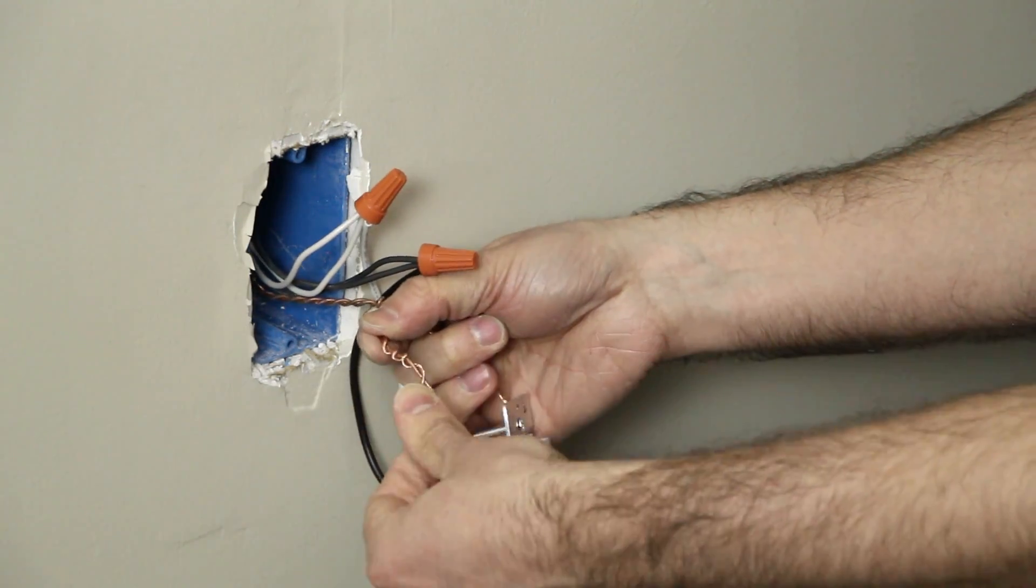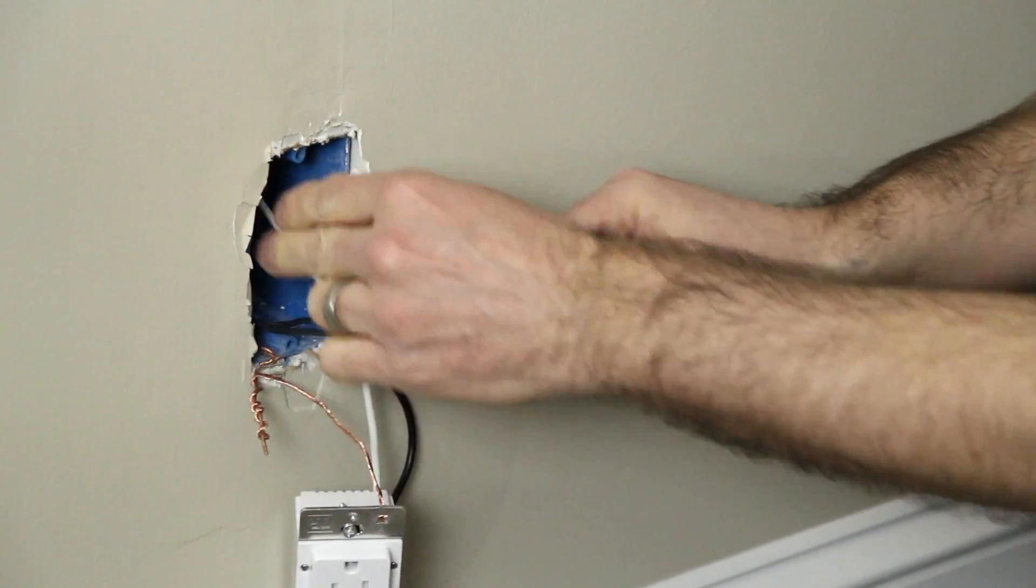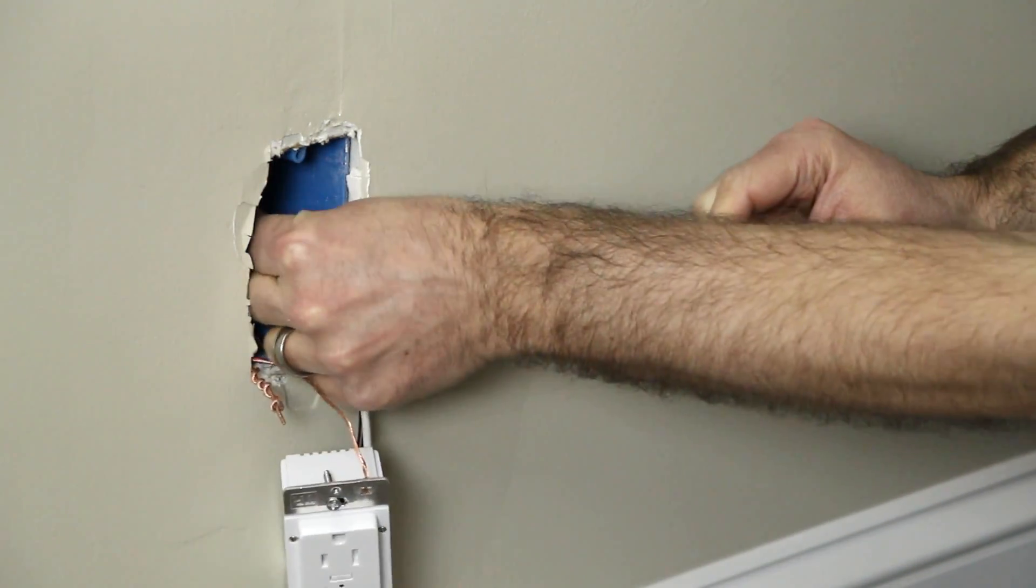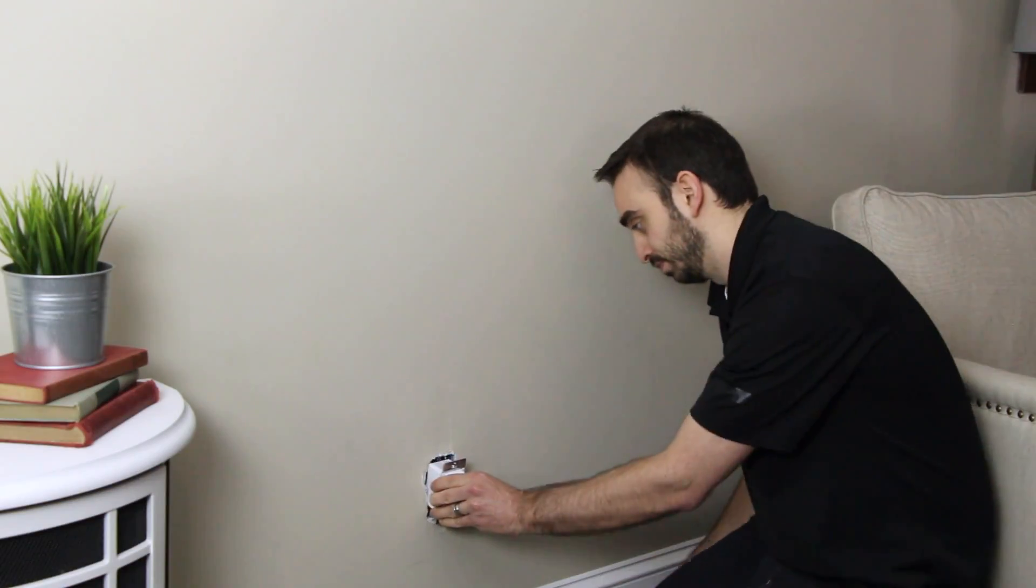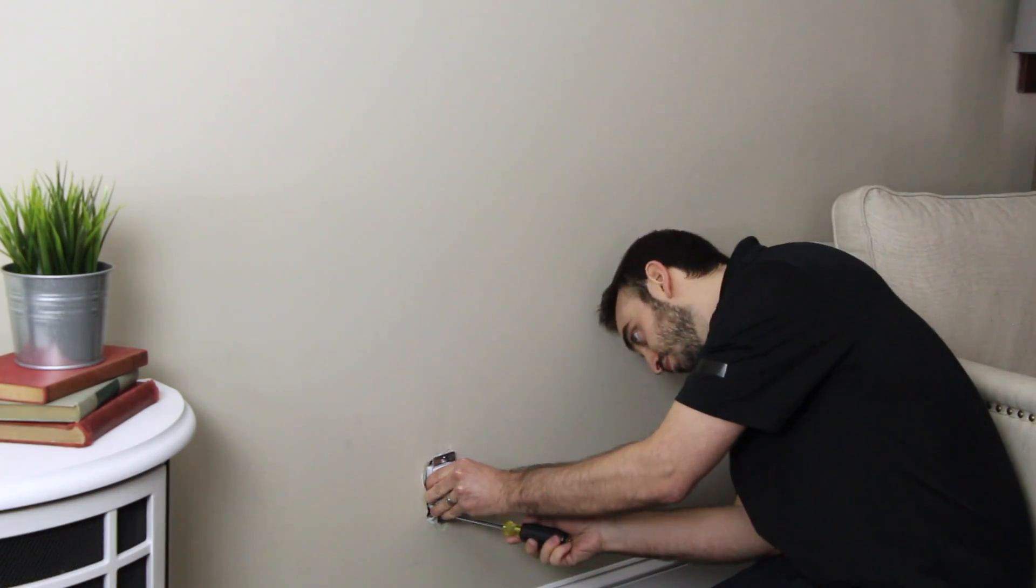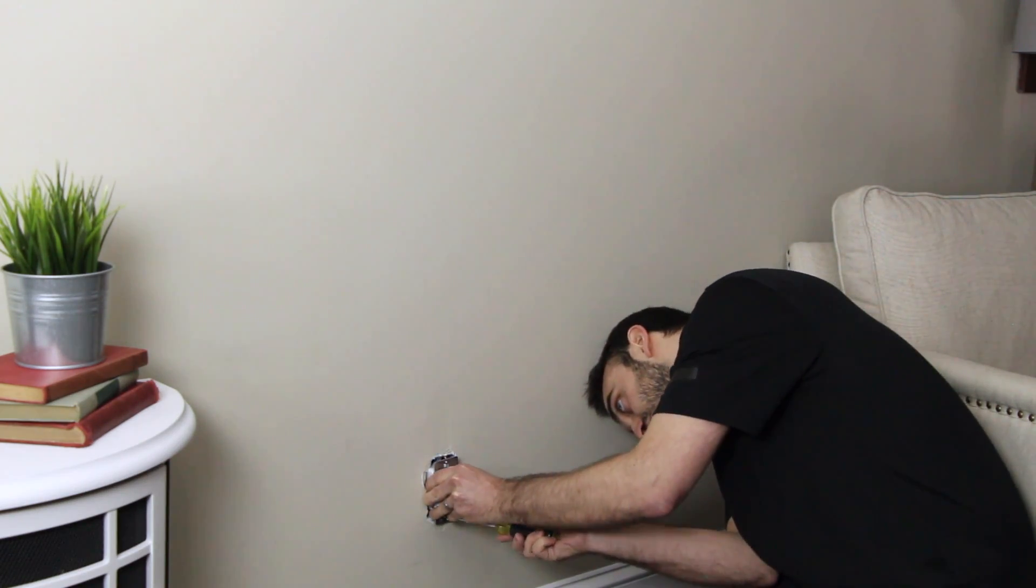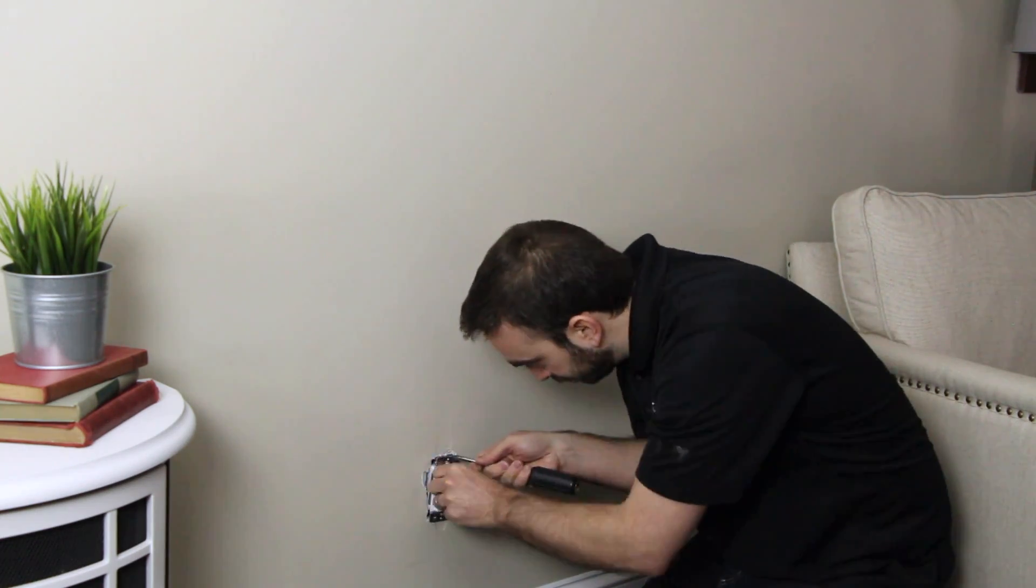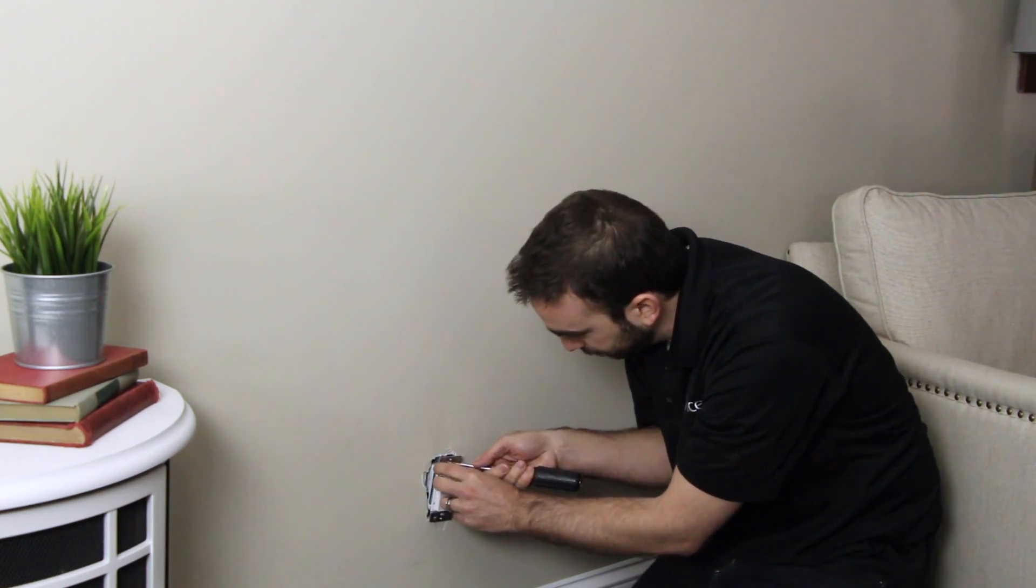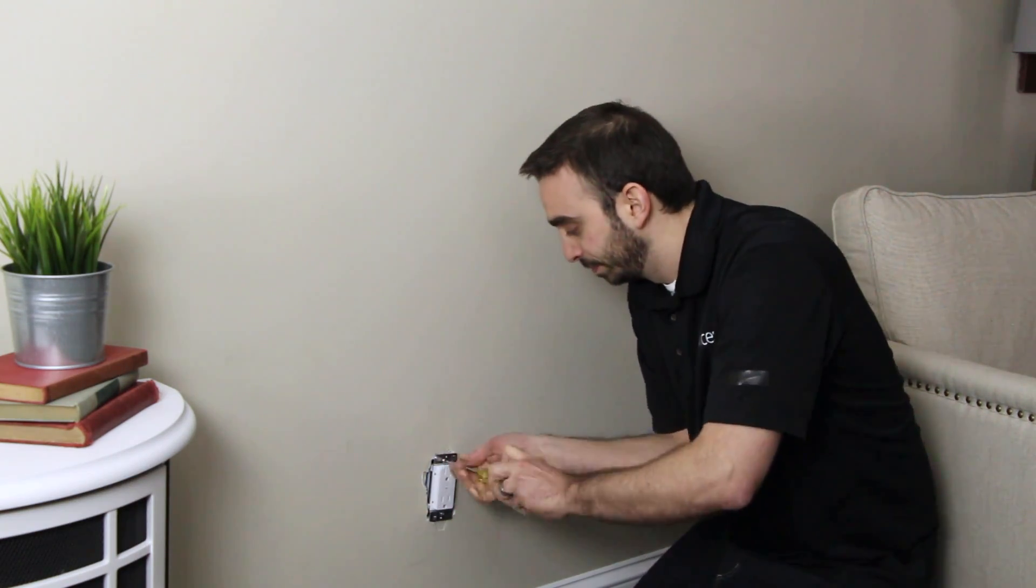Ensure all wire nuts are securely fastened. Carefully push the wires into the gang box and install the wall outlet into the gang box, taking care not to pinch any wires. Secure the iDevices Wall Outlet into the gang box with the provided screws. It's best to start both screws before tightening to keep installation easy and ensure the outlet is straight.